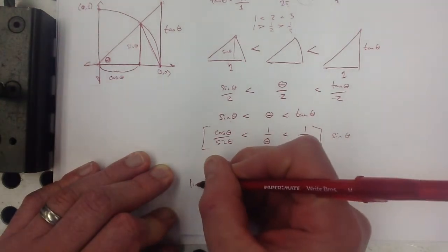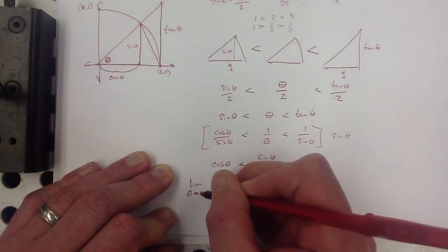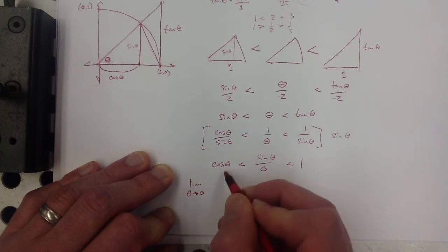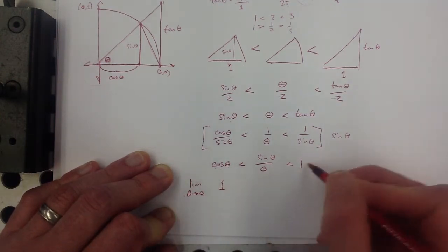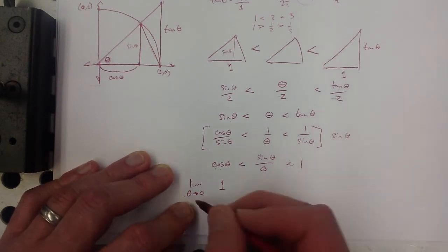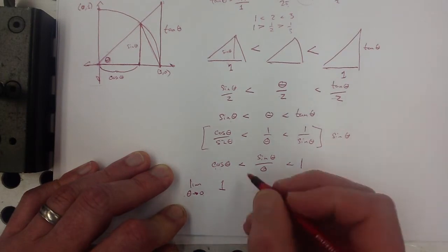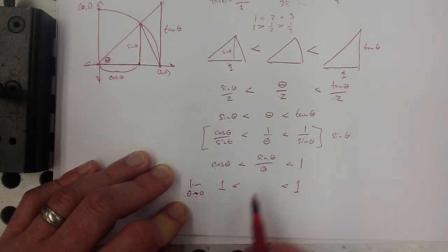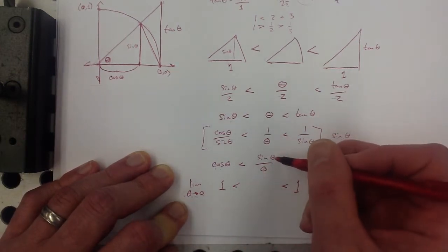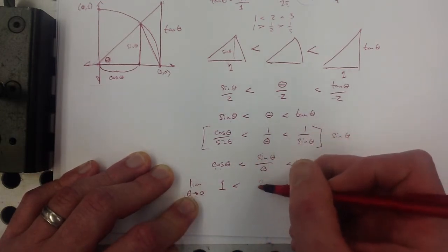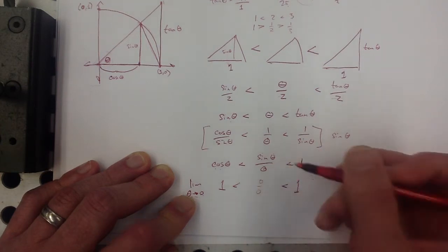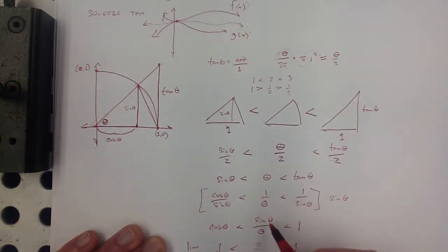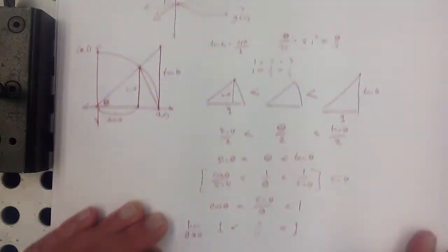Now I want the limit as theta approaches 0 of each expression. The limit of cosine theta as theta approaches 0 is cosine(0) = 1. The limit of 1 is just 1. So both outer bounds go to 1. The middle expression, sine theta over theta, is trapped between them, so its limit must also be 1. If you tried to plug 0 in directly, you'd get 0 over 0 — but the squeeze theorem tells us it equals 1.